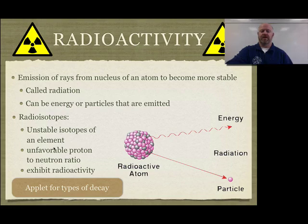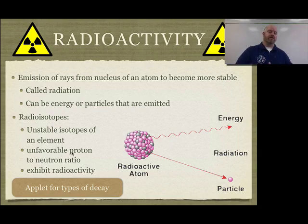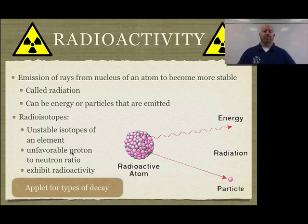For some reason, they have an unfavorable proton to neutron ratio and they exhibit radioactivity. Now, this ratio might mean they have too many protons or it might mean they have too many neutrons in that ratio. So there's different types of decay that allow us to actually change that ratio from protons and neutrons.